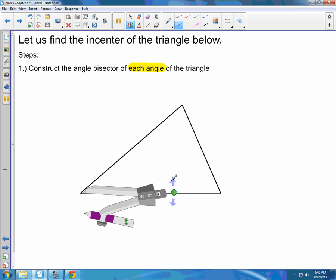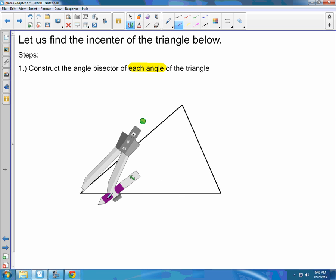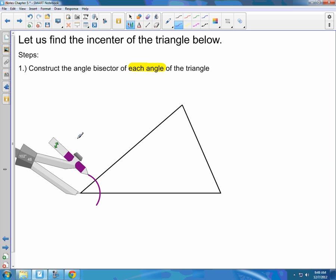So to do that, we're going to take our compass and center it on a vertex of the triangle and construct the angle bisector for that angle. So again, draw an arc that goes through both sides of that angle. We'll center on one of those intersection points and then draw an arc inside of that angle.